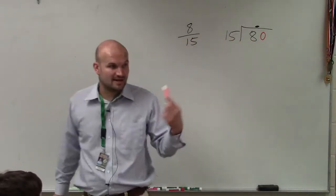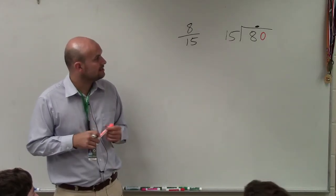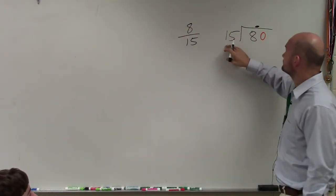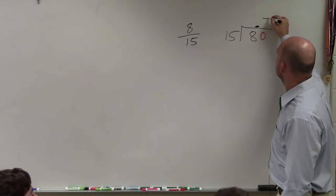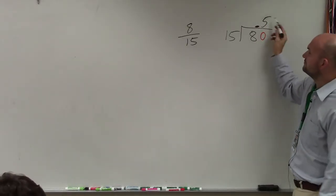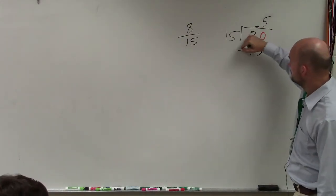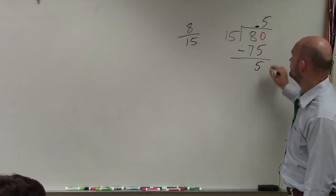Now, does 15 divide into 80? Yes. And how many times does it divide into 80? Five. Five times 50, 25. So that would be, what am I doing? Five. Then you multiply 5 times 15. 5 times 15 is going to be 75. Now, if you subtract, 80 minus 75 is going to be 5.